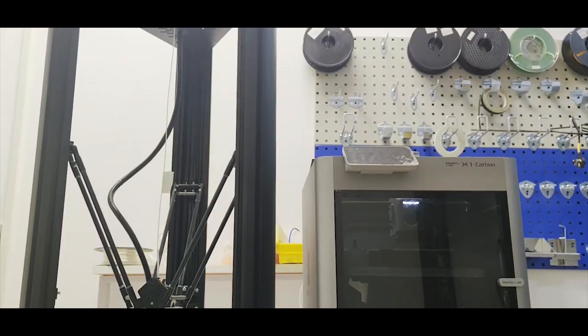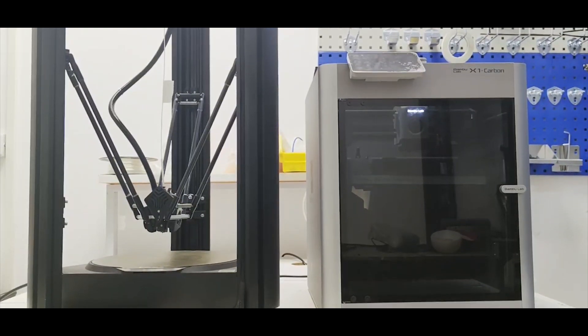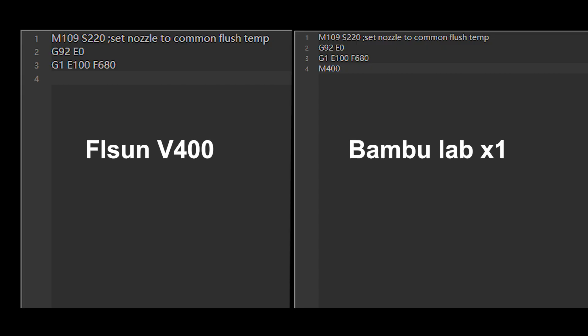Now we can test the melting rate of the V400 and the X1 by extruding 100 millimeters of filament at the same extrusion speed, 680 millimeters per minute.